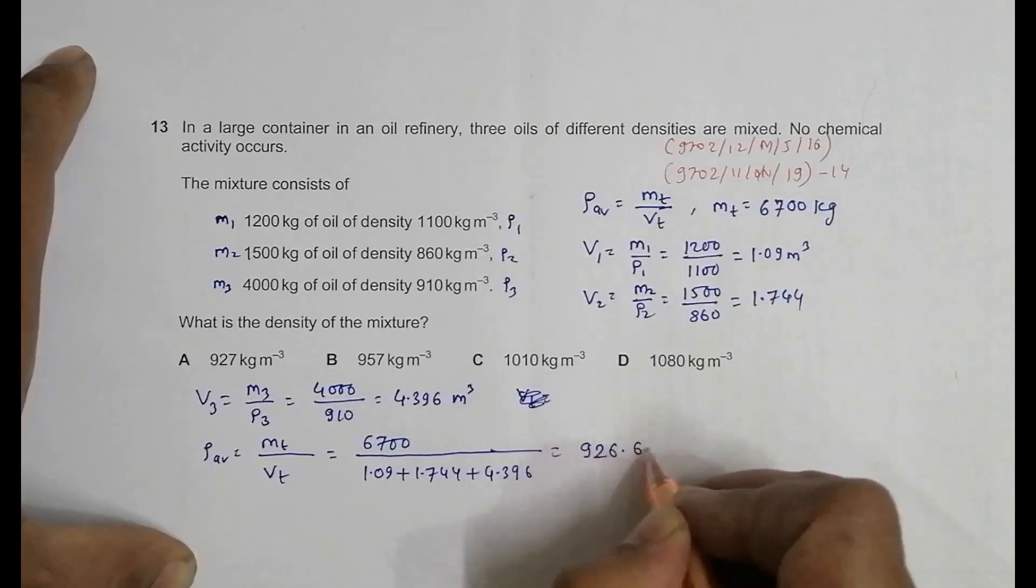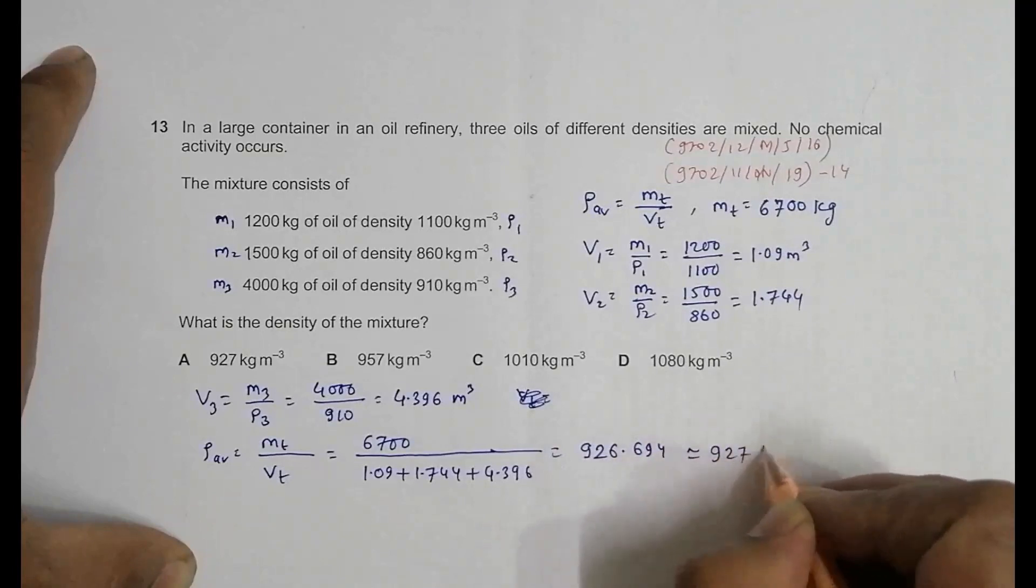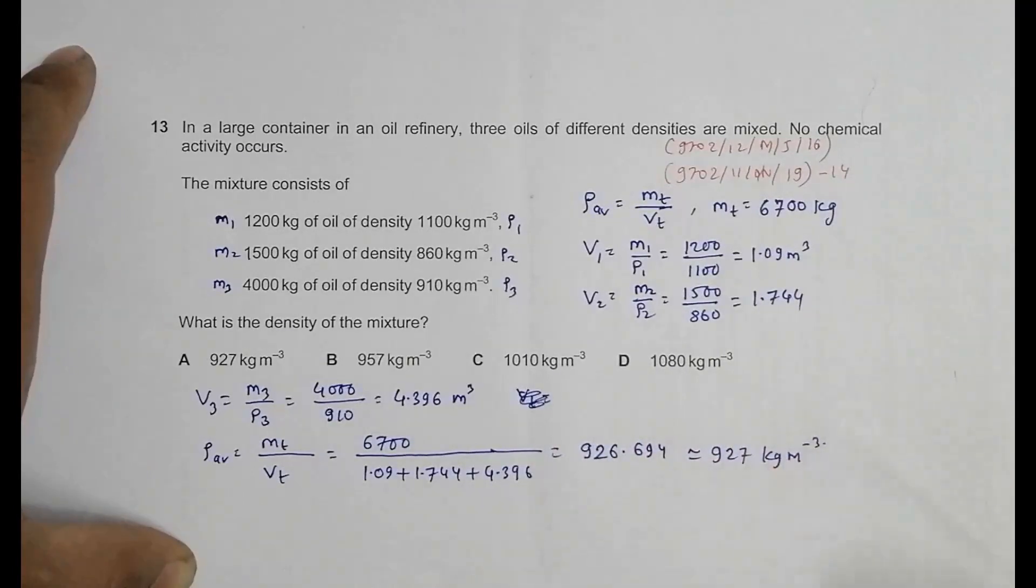This comes to be equal to 926.694 and so on, so when I round it off it becomes 927 kg per meter cubed.